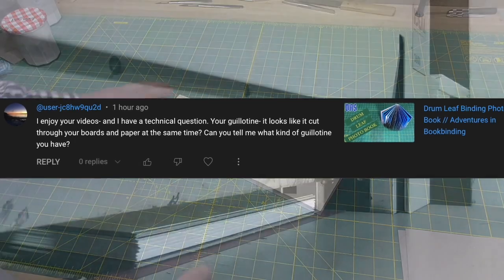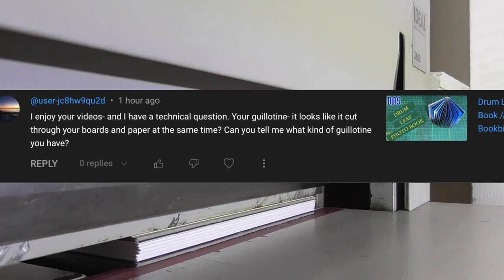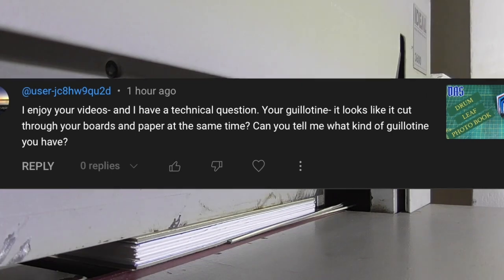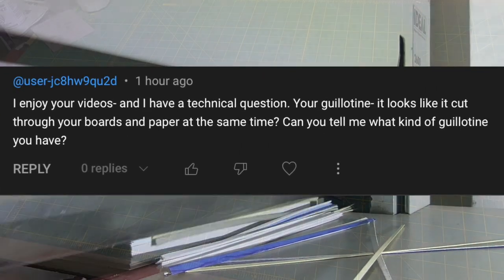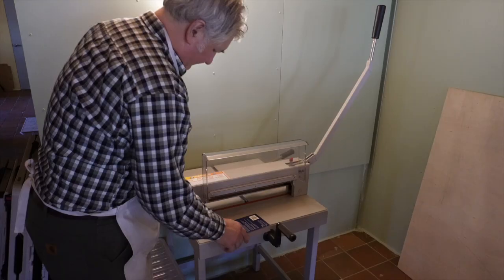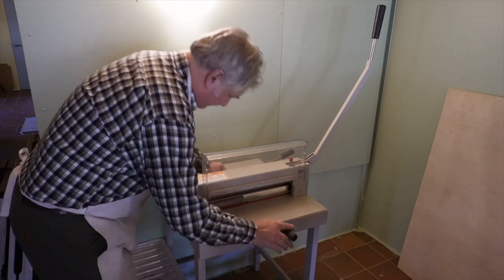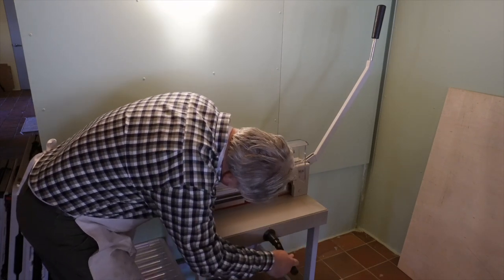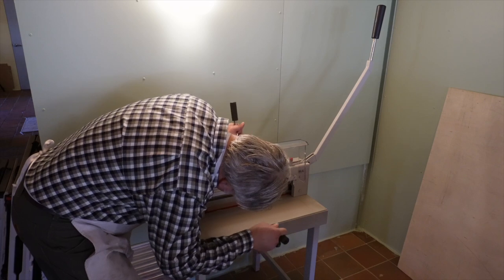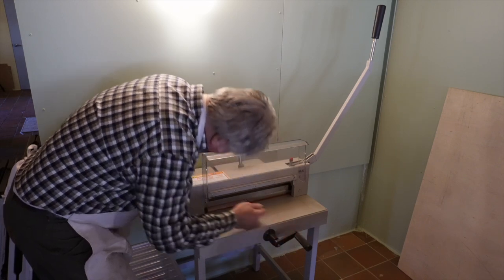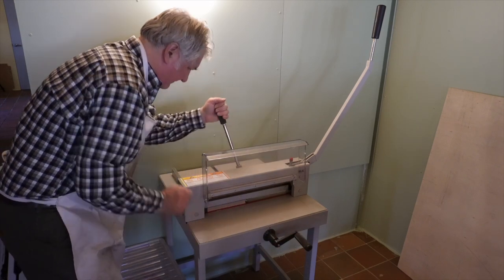First question is about my guillotine and about it cutting through board and paper at the same time in the sewn board binding. Cutting board with a guillotine isn't the best thing to do because it's hard on blades. But sometimes you just have to do what you have to do, and the sewn board binding is a case where it's hard to avoid.